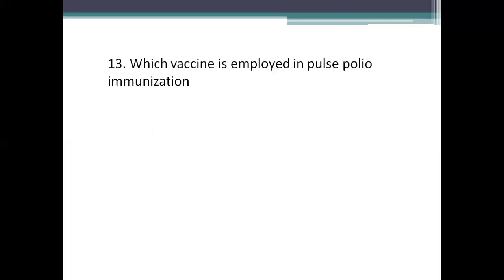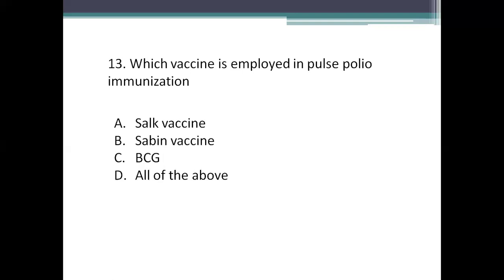Next question: which vaccine is employed in the pulse polio immunization program? Option A: Salk vaccine. Option B: Sabin vaccine. Option C: BCG. Option D: all of the above. The right answer is Option B, Sabin vaccine — called Sabin's OPV, oral polio vaccine — used in the pulse polio immunization program. It is a live attenuated vaccine. Salk vaccine is the IPV, inactivated polio vaccine, given as injection. BCG gives protection from tuberculosis.